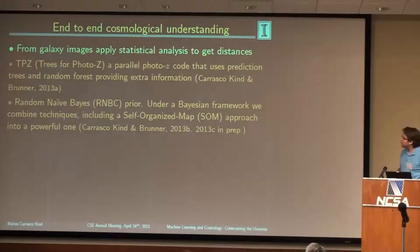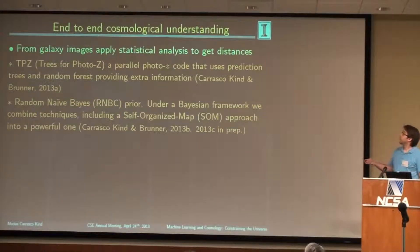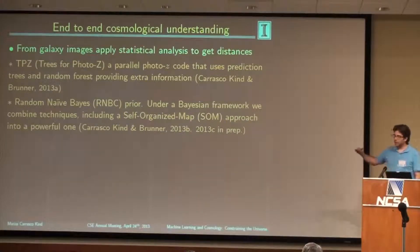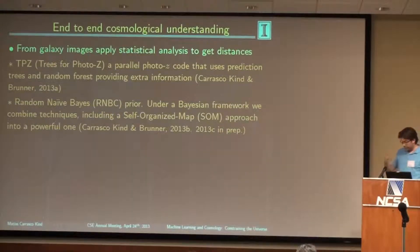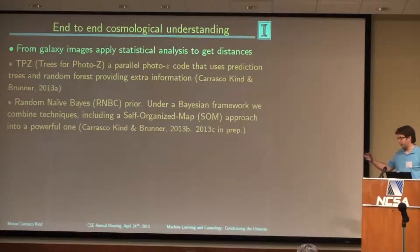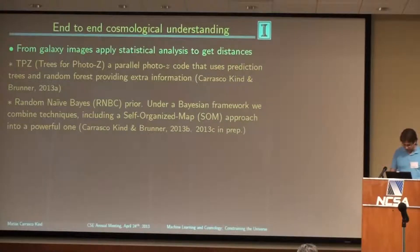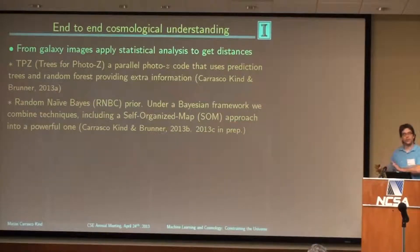This is the main slide of my talk — our work. We have developed an end-to-end cosmological framework. We compute the distances to galaxies, then study the clustering of galaxies, and then fit cosmological parameters. From galaxy images, we apply statistical analysis to get distances. We recently developed TPZ — Trees for Photo-Z's — which is a parallel photo-z algorithm that uses prediction trees and random forests along with additional information to predict photometric redshifts. We released the code and published the paper along with it.